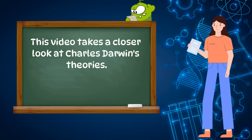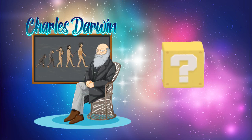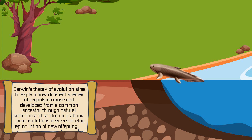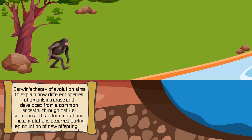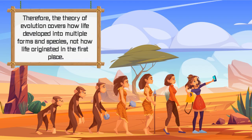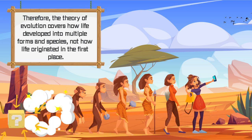This video takes a closer look at Charles Darwin's theories. Did Darwin explain how life came into existence? Darwin's theory of evolution aims to explain how different species of organisms arose and developed from a common ancestor through natural selection and random mutations. These mutations occurred during reproduction of new offspring. Therefore, the theory of evolution covers how life developed into multiple forms and species, not how life originated in the first place.